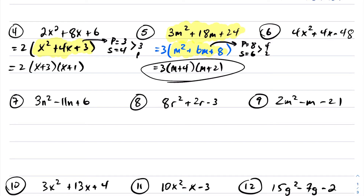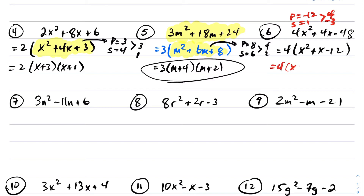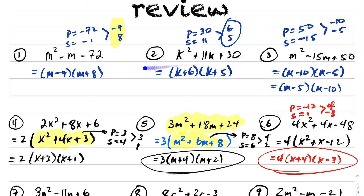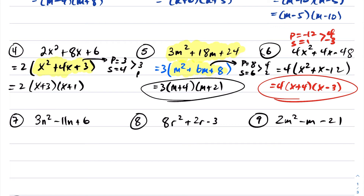For question 6, the GCF is 4, leaving x squared plus x minus 12. I need two numbers whose product is negative 12 and whose sum is 1 — those are 4 and negative 3. So this factors into 4 times x plus 4 times x minus 3. Notice the difference: some questions are simple trinomials with no GCF, while others require taking out a GCF first before applying the simple trinomial product sum approach.